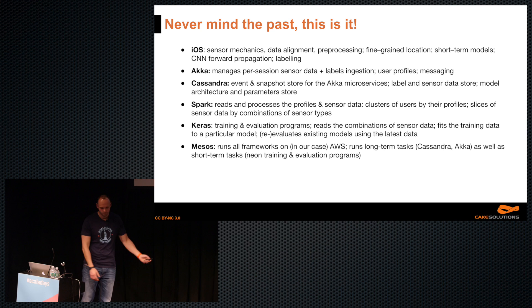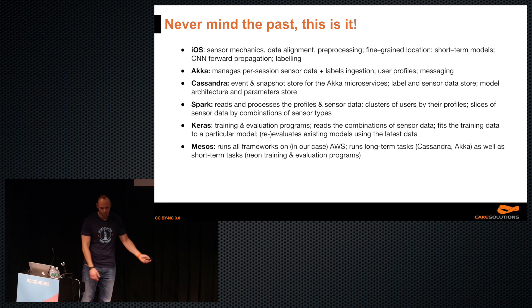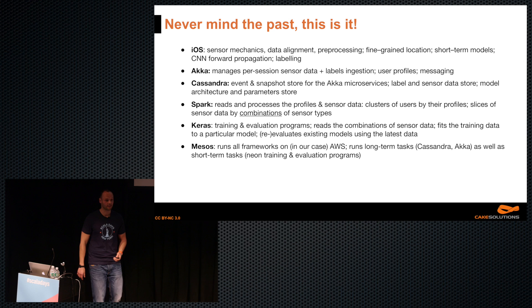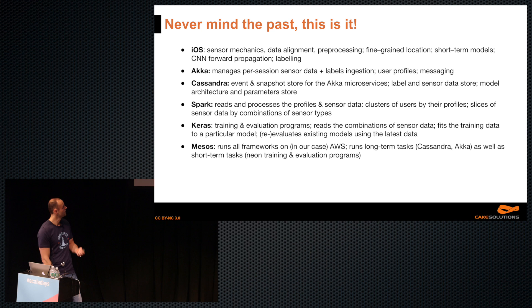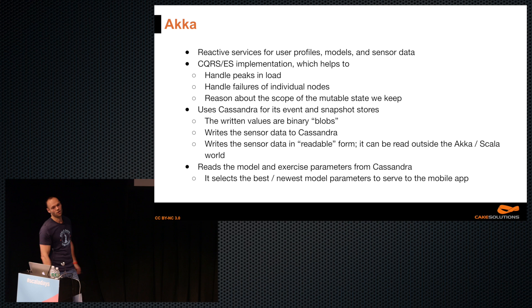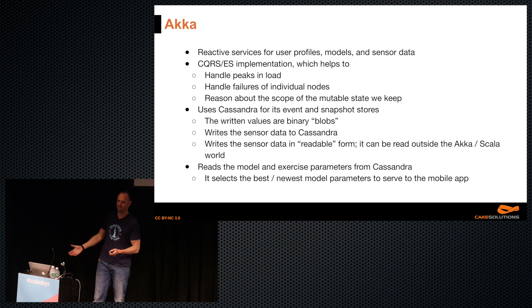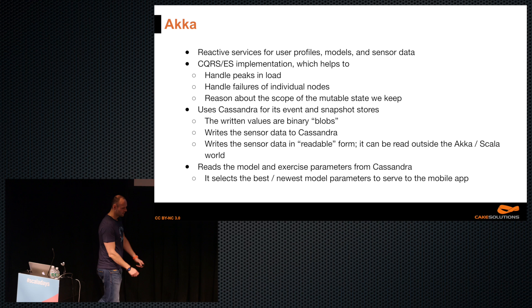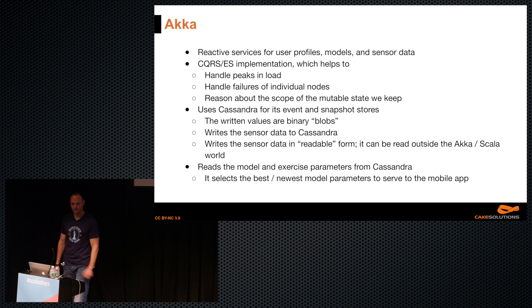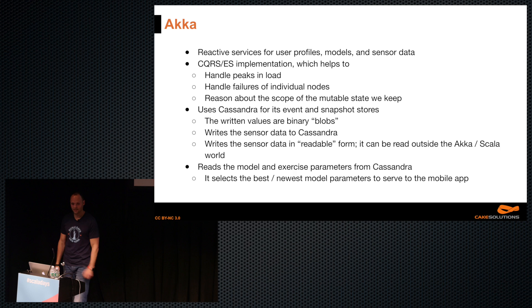Technologies: iOS on mobile and Swift, Akka, Cassandra, Spark, and Keras mainly for experiments — because Keras gives us an abstraction over either Theano or TensorFlow. TensorFlow in the real big application. Locally I have a small set of Docker containers and can train on Theano. We have Mesos to run all of this on AWS to squeeze as much power out as possible. The reactive service for user profiles uses CQRS, Cassandra for events and journals, also writes properly structured data to Cassandra, and delivers model parameters via Apple's CDN to mobile apps.